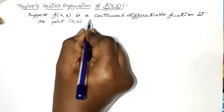These are all partial differentiations. This is third order partial differentiation, plus the last term is (y minus b) whole cube into f_yyy at the point (a, b) — close the bracket — plus so on. This is called the Taylor series expansion of f(x, y) in the neighborhood of the point (a, b).